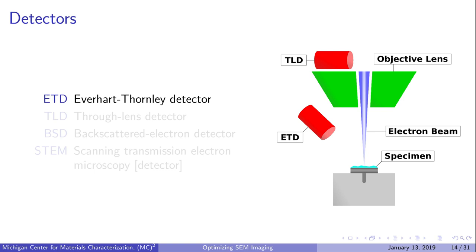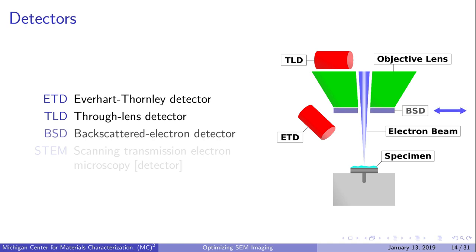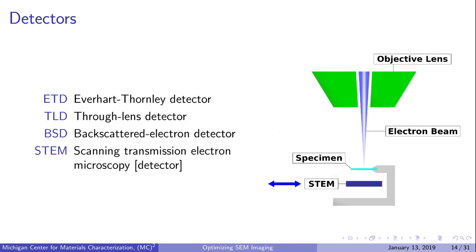The next imaging parameter is the detector used to collect the signal. Let's go over the acronyms and positions of four typical SEM detectors. The Everhart-Thornley detector (ETD) is positioned off to the side at an angle. The through-lens detector (TLD) is typically located above the objective lens and may also be referred to as the in-lens detector. The backscattered electron detector (BSD) is normally retracted and comes in from the side just below the objective lens, shaped like a ring so the electron beam can pass through the middle. The STEM detector is also retractable, disc-shaped, requires a different specimen holder, and sits underneath the specimen.